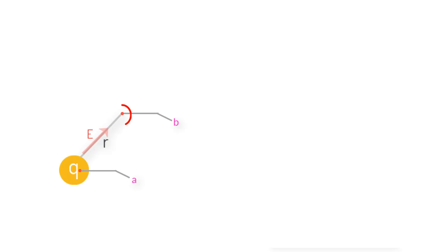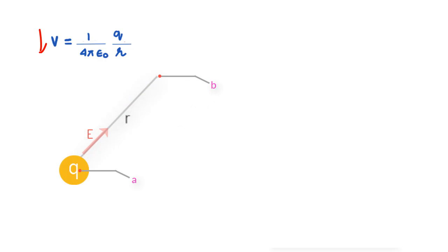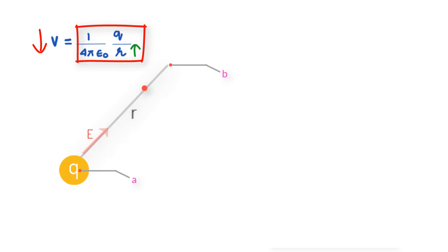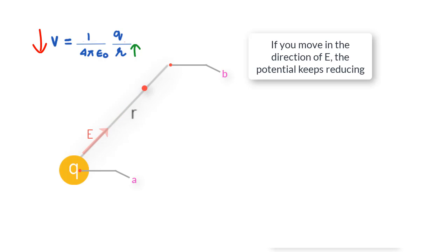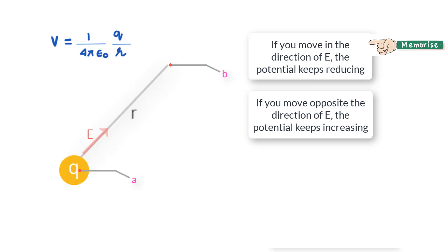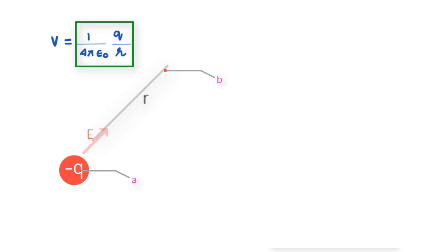Let us understand this better by considering a positive charge that creates a field E. The potential at any point is V = (1/4πε) × Q/R. This expression is positive for all R values, and if you move away from the charge, the R value increases, thereby reducing V. So as you move in the direction of the electric field E, the value of V keeps reducing.